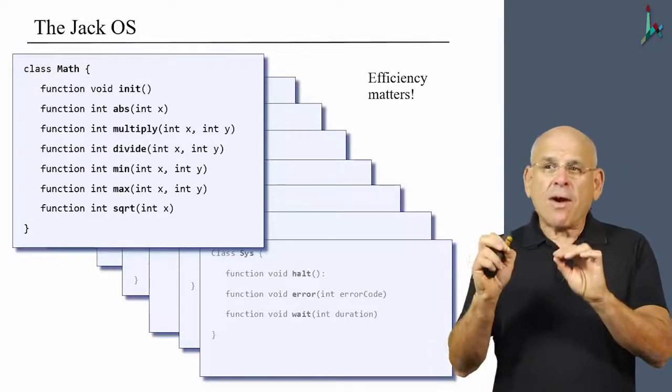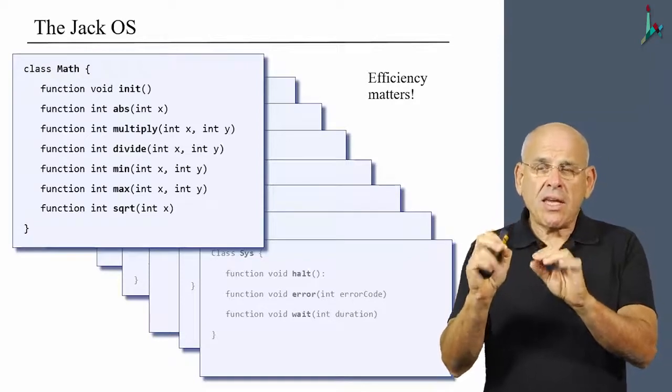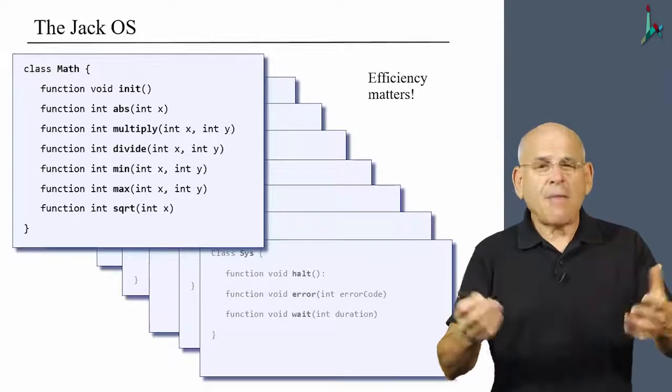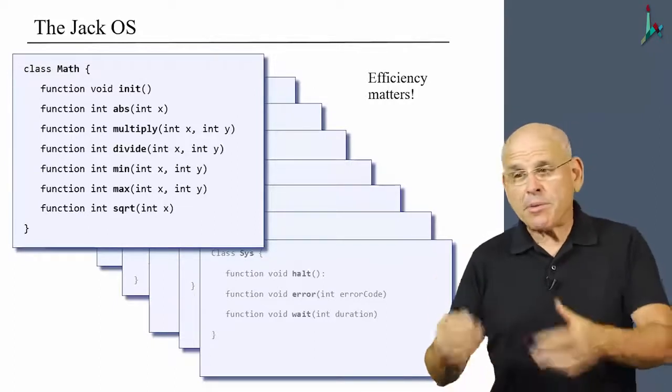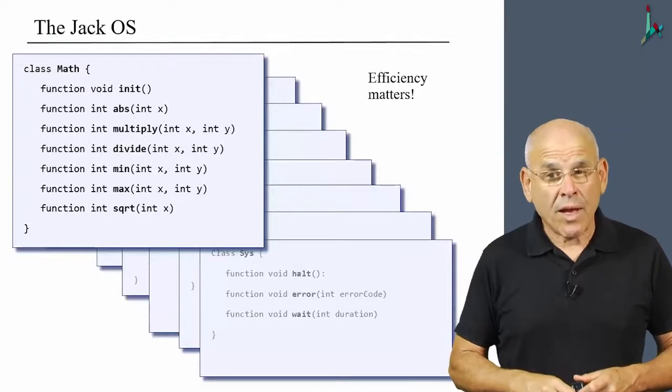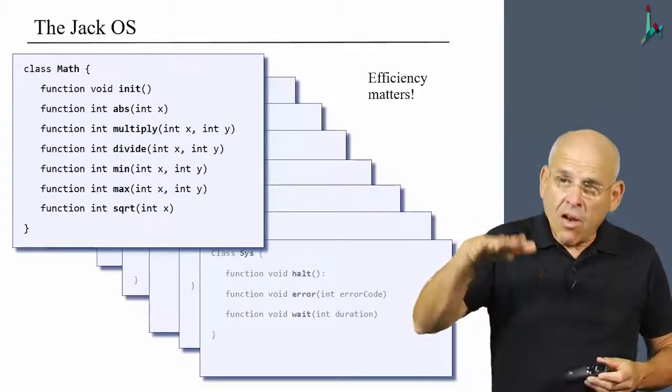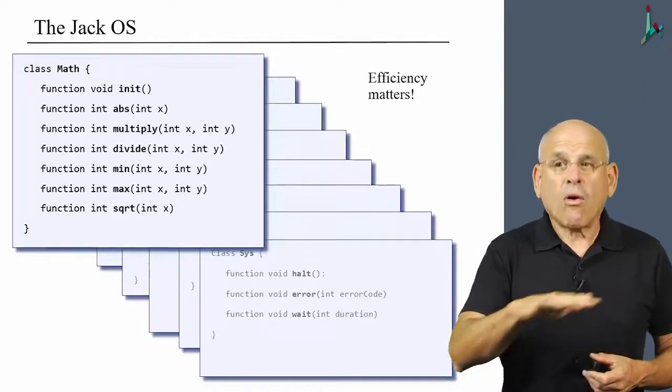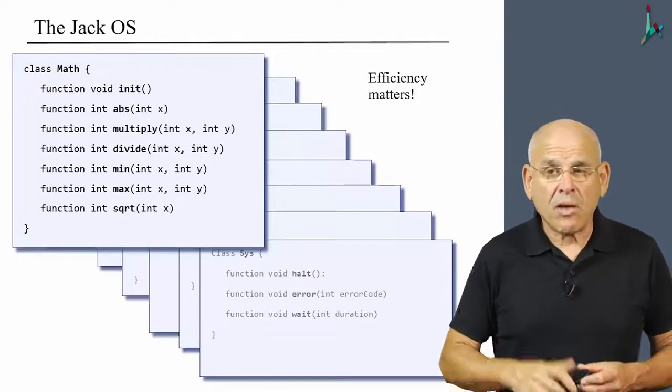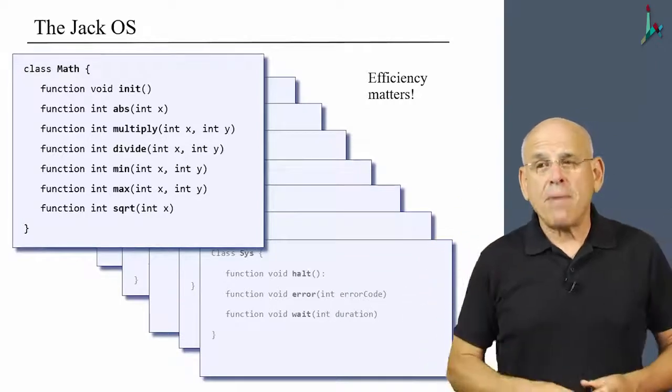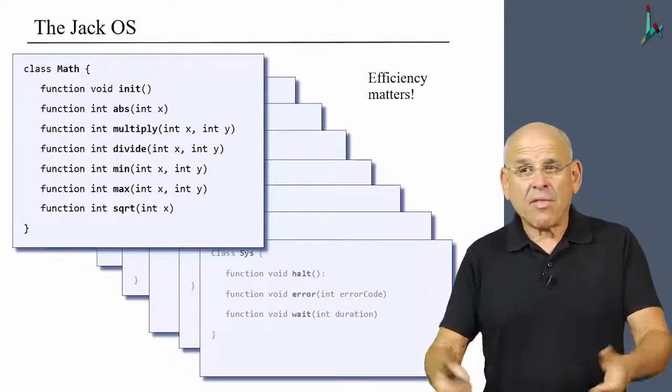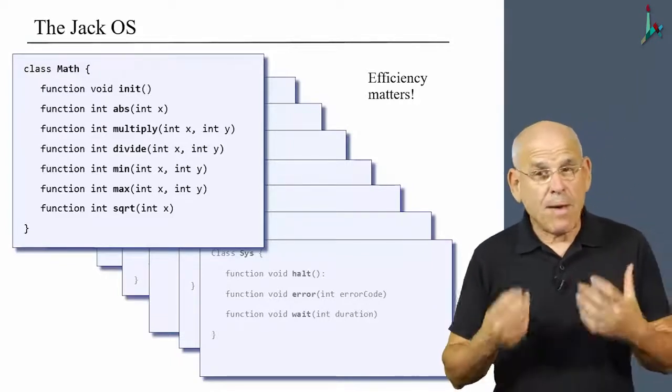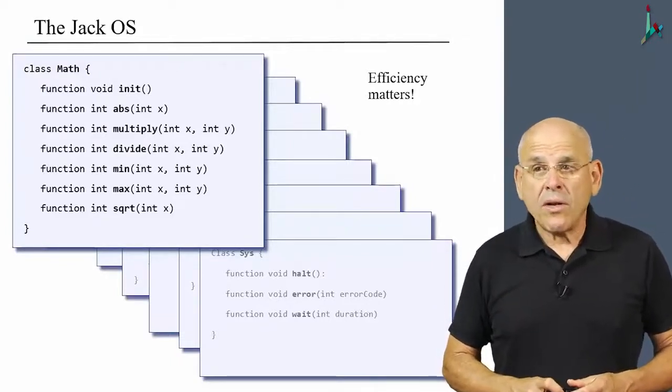Every one of the operations that you see here is going to be used by numerous application programs and perhaps by other classes in the operating system as well. So the lower is the service in the software hierarchy, the more you want it to be efficient, because it is going to support many more services on top of it. Now think about things like multiplication, division, square root - they better be efficient.